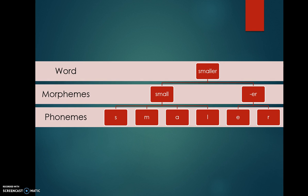In the same way, the ER sound, that sound together, the ER together, does mean something. It's the morpheme ER that means greater than or more than. But by itself, the E and the R don't have meaning. Those are phonemes.